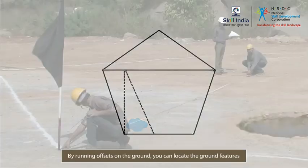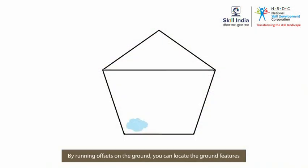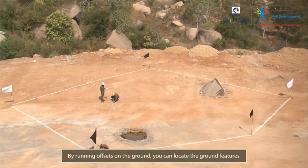So, remember, by running offsets on the ground with the help of cross staff and chain or tape, you can locate ground features and check their position on plans.